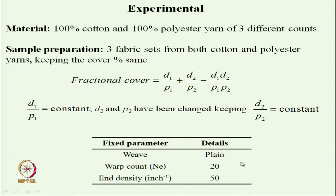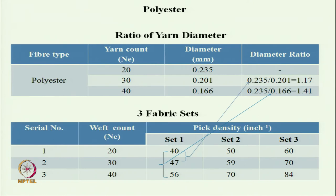Warp count in English count is 20, and ends per inch was kept constant at 50. These are the fixed parameters. Two different yarns were developed: one polyester and another cotton. To keep cover percent constant, the pick density must be adjusted so that the D/P ratio remains constant. Polyester yarns of three different linear densities were used: 20s, 30s, and 40s English count, with measured diameters of 0.235, 0.201, and 0.166 mm respectively.